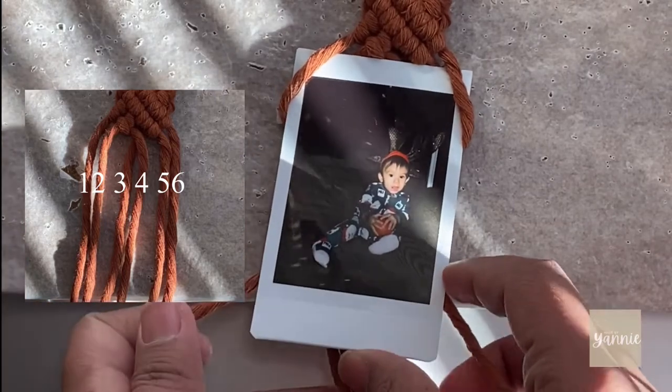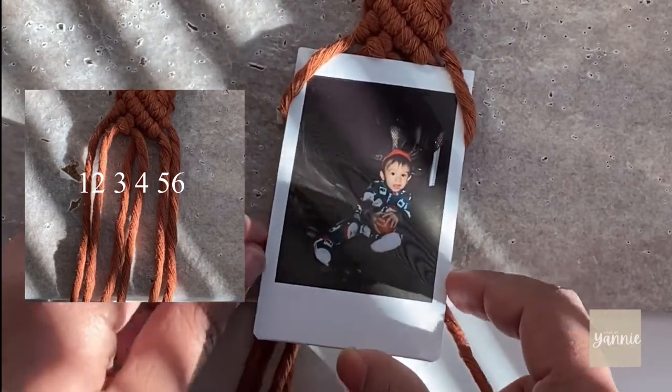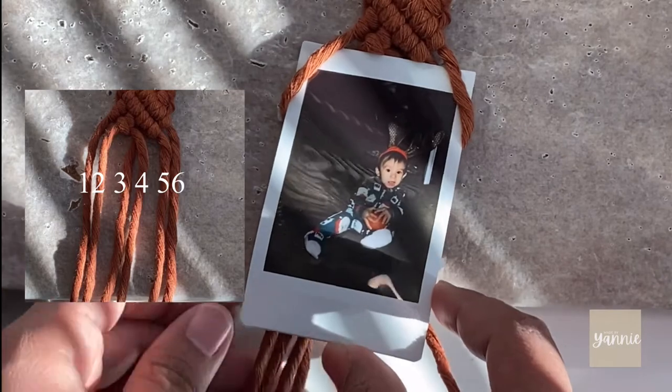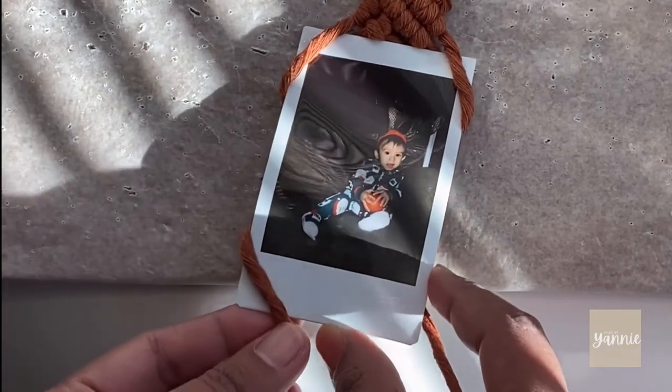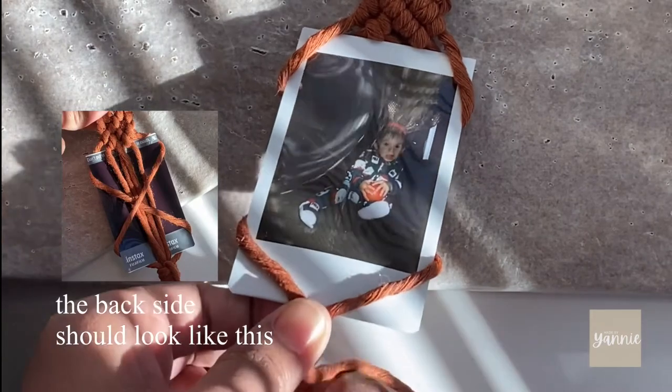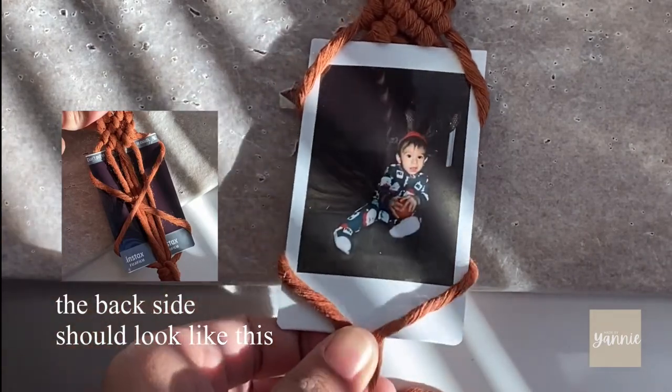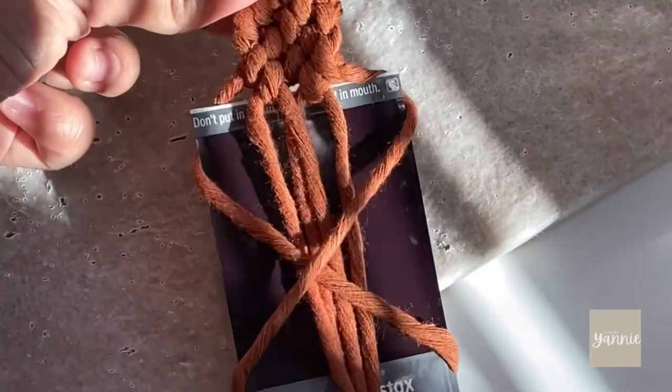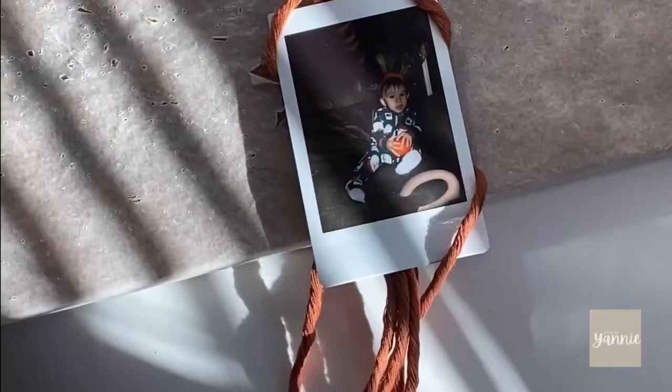If you remember, we brought cord six over to the right side. Now grab it and bring it in front of the picture. Do the same with cord one. So this is a close-up video of how it should look like in the back.